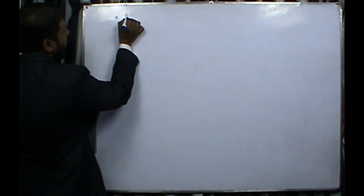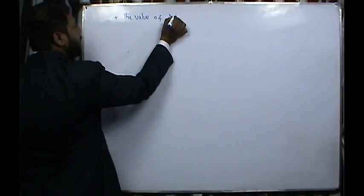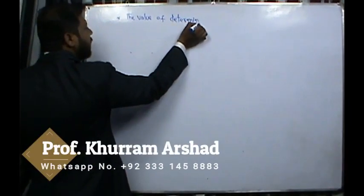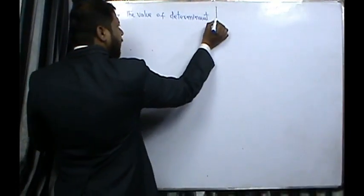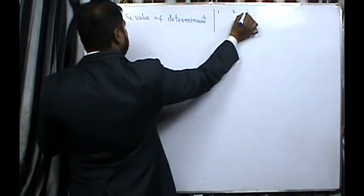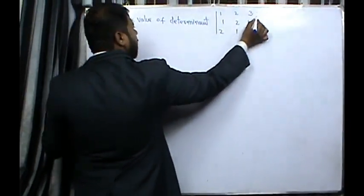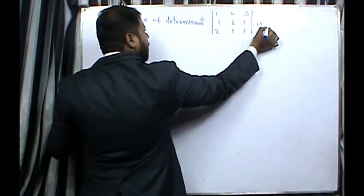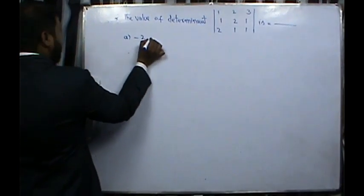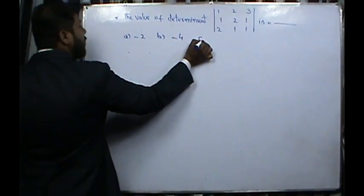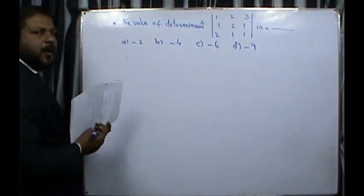From the value of determinant, the determinant has entries 1, 2, 3 in row 1; 1, 2, 1 in row 2; and 2, 1, 1 in row 3. In this case, the determinant to solve: a = 2, b has been given as -4, c has been given as -6, and d = -9.